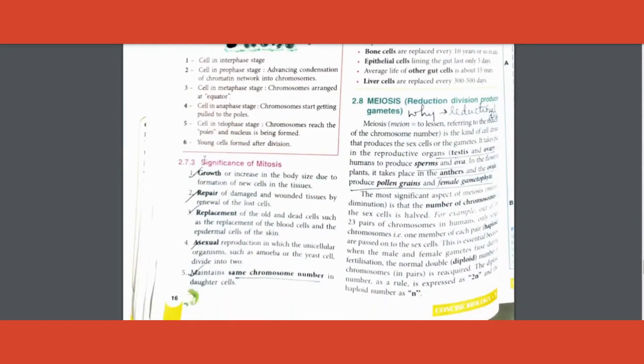Significance of mitosis - repair, replacement, growth, asexual reproduction, and number of chromosomes remain same. Meiosis - why is it called reductional division? Very important question. You should write it is because the number of chromosomes in the four daughter cells that are formed is half the number of chromosomes as the parent. Write that statement, you get that two marks. Where is it found? Usually in the formation of gametes.